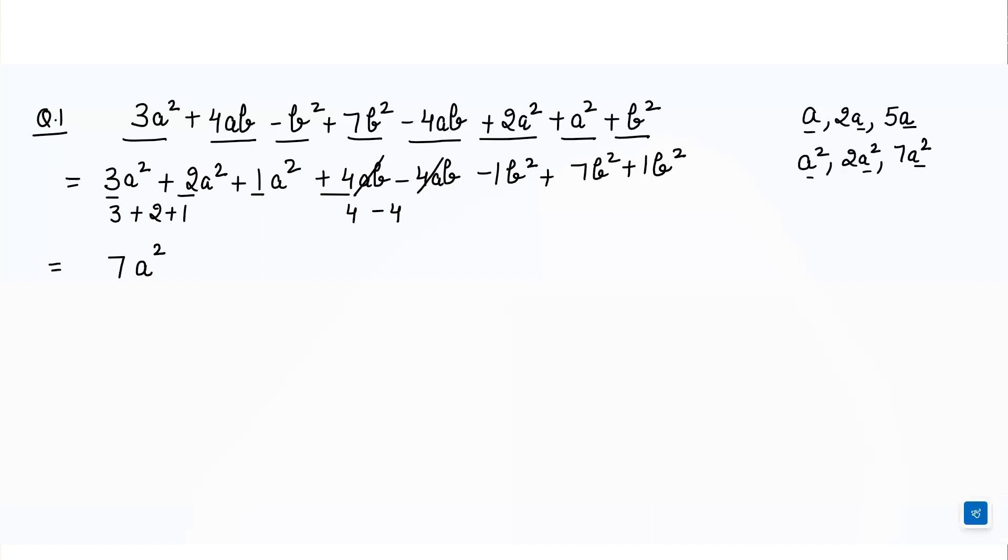Then we have next negative 1 plus 7 plus 1. So negative 1 plus 7 is equals to 6. 6 plus 1 is equals to 7. So plus 7b square is the answer.